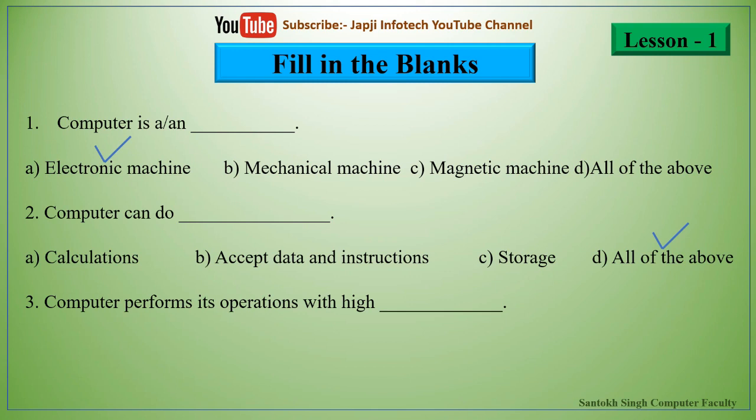The third one is: computer performs its operation with high blank. The options are speed, accuracy, quality, or all of the above. The right answer is computer performs its operation with high speed, accuracy, and quality. So the right answer is all of the above.